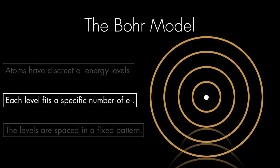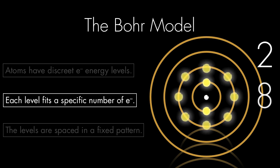Each one of these levels can fit a specific number of electrons. As we've already learned when we called them shells, the first level can hold two electrons, the second can hold eight, and the third can hold eight again.